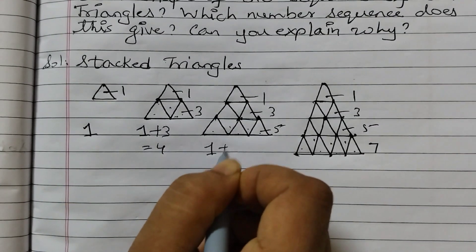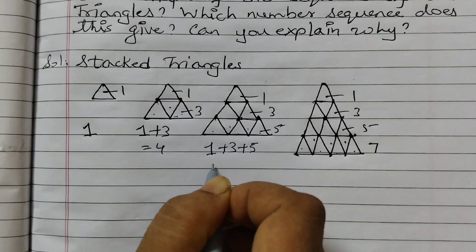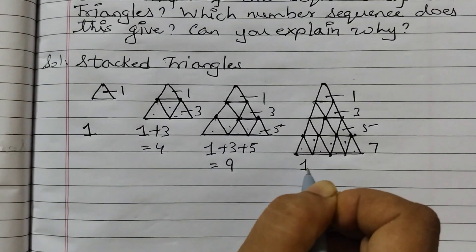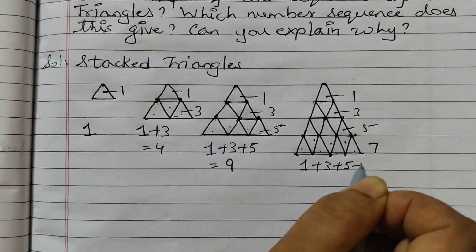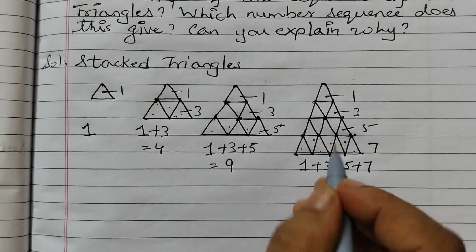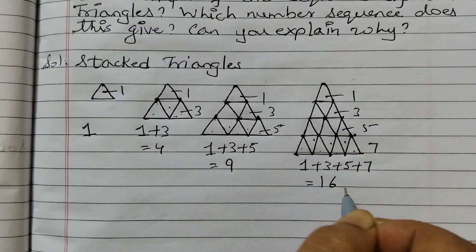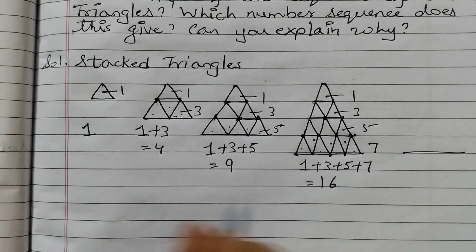1 plus 3 plus 5 which equals 9. 1 plus 3 plus 5 plus 7 - I am adding up all the small triangles - that equals 16. Now if you draw the next one, if you see the pattern, that would be 25.